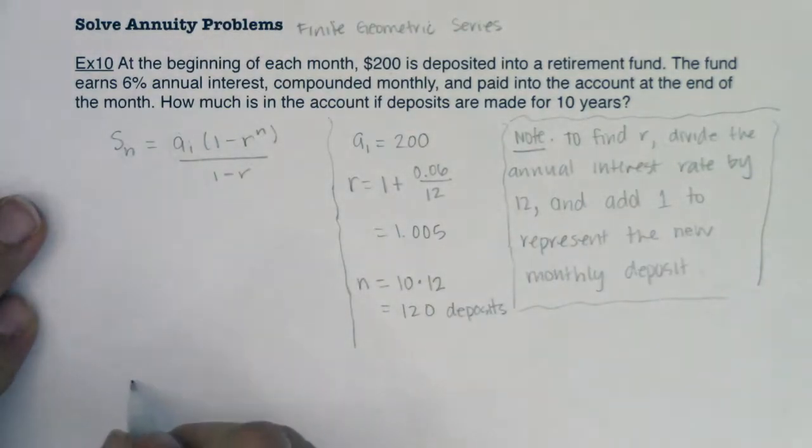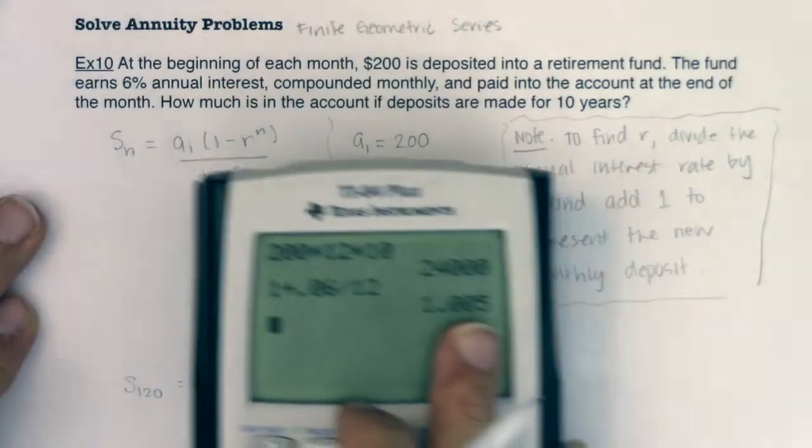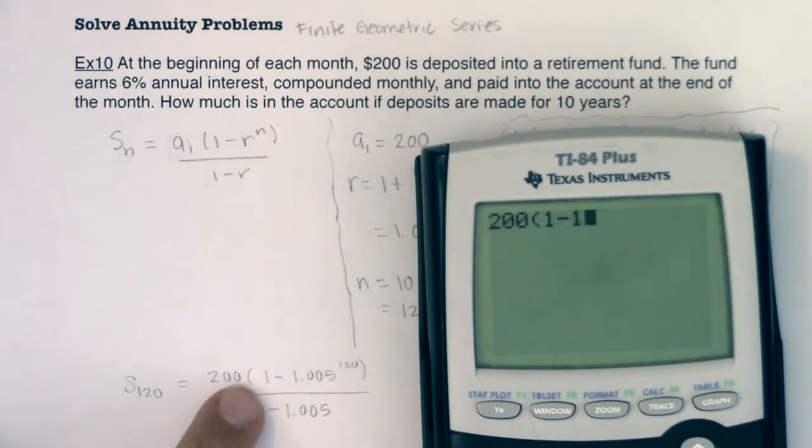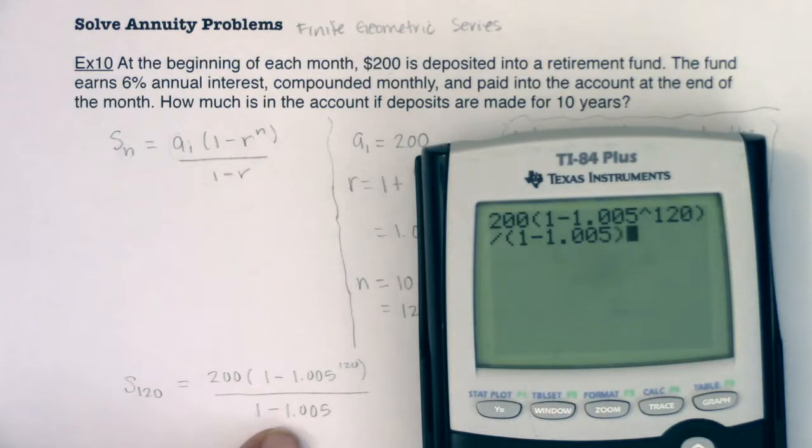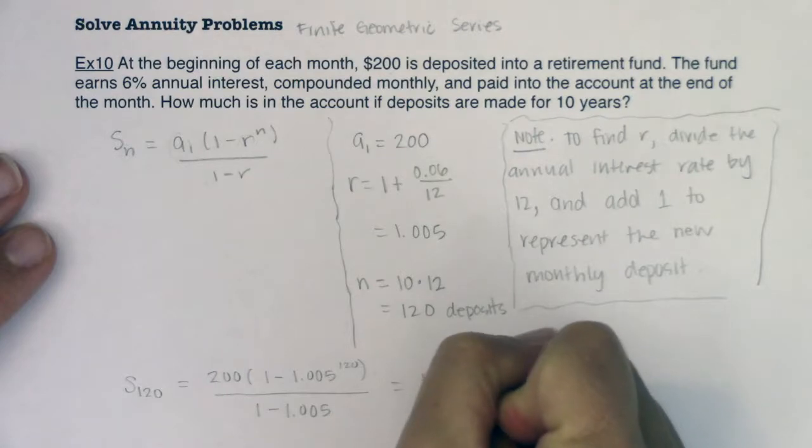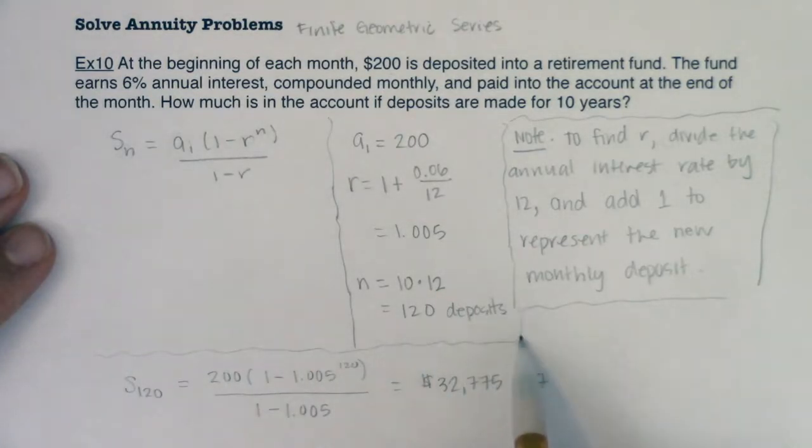So S of 120 equals a_1 times (1 minus r to the n) over (1 minus r). Our n was 120. Let's see how much money we have. I'm going to be really careful with my parentheses. So I'm going to do 200 times (1 minus 1.005 raised to the 120th power) divided by (1 minus 1.005). And when I crunch that number, it looks like I'm going to have $32,775.87.